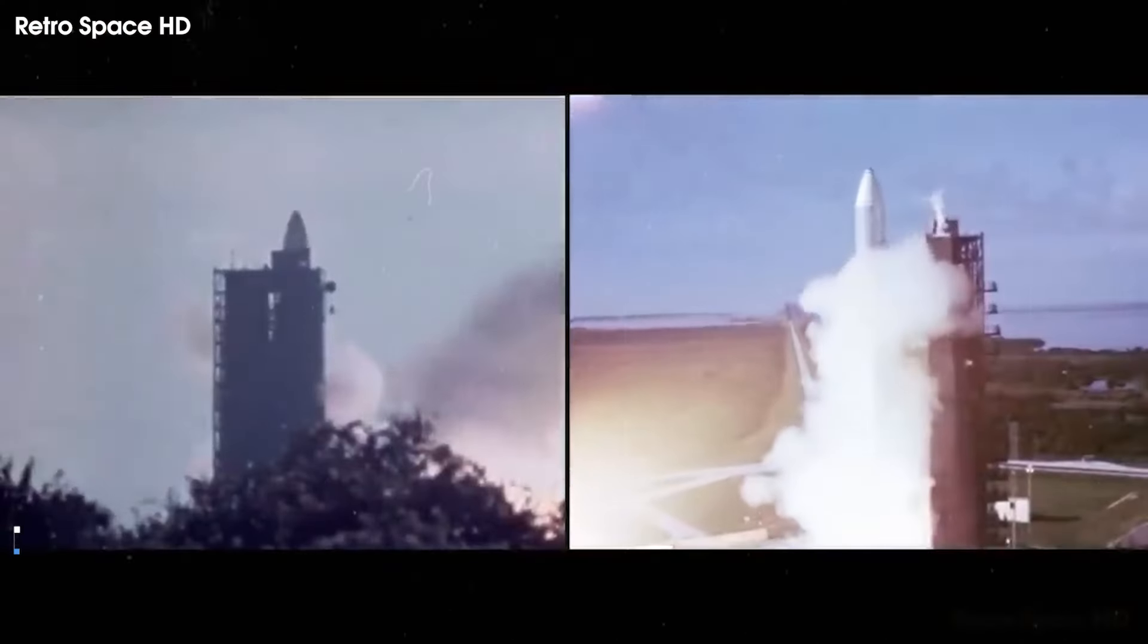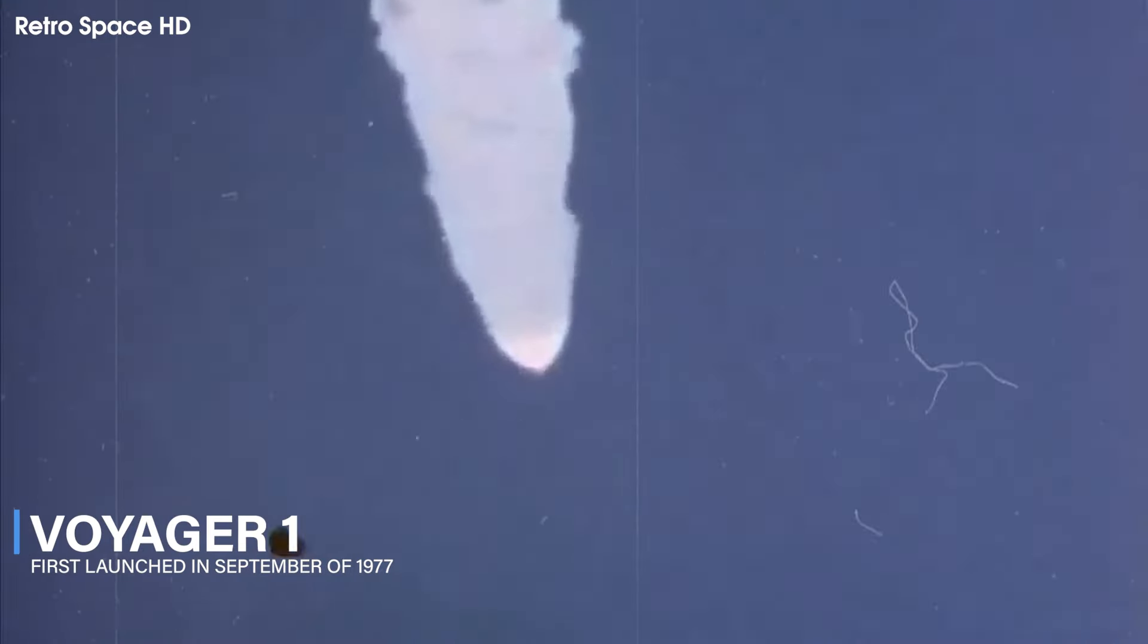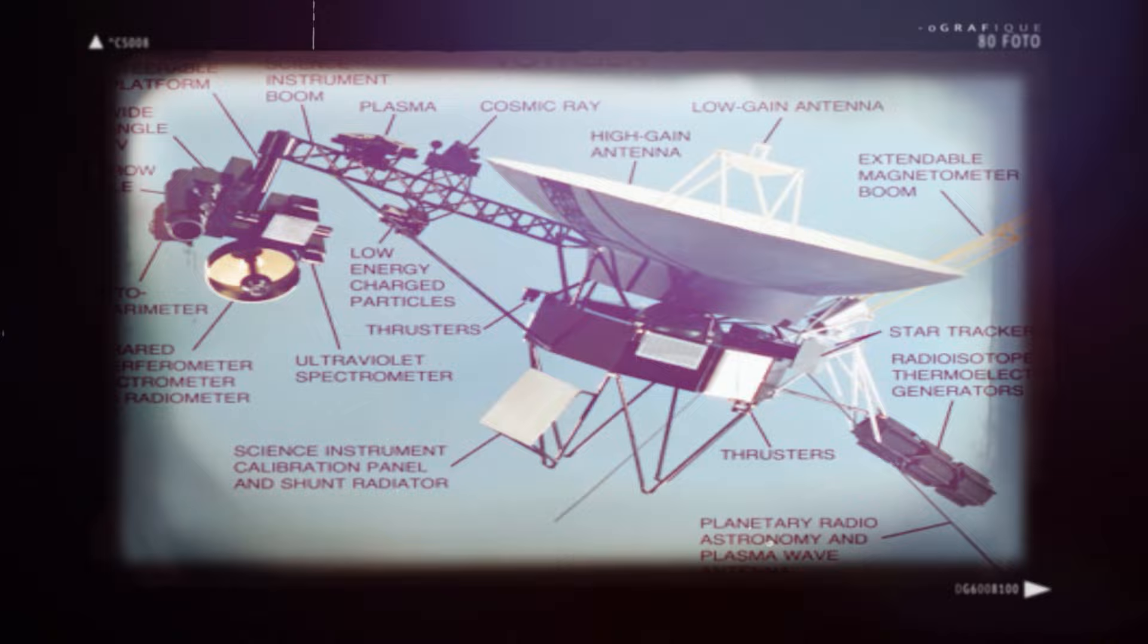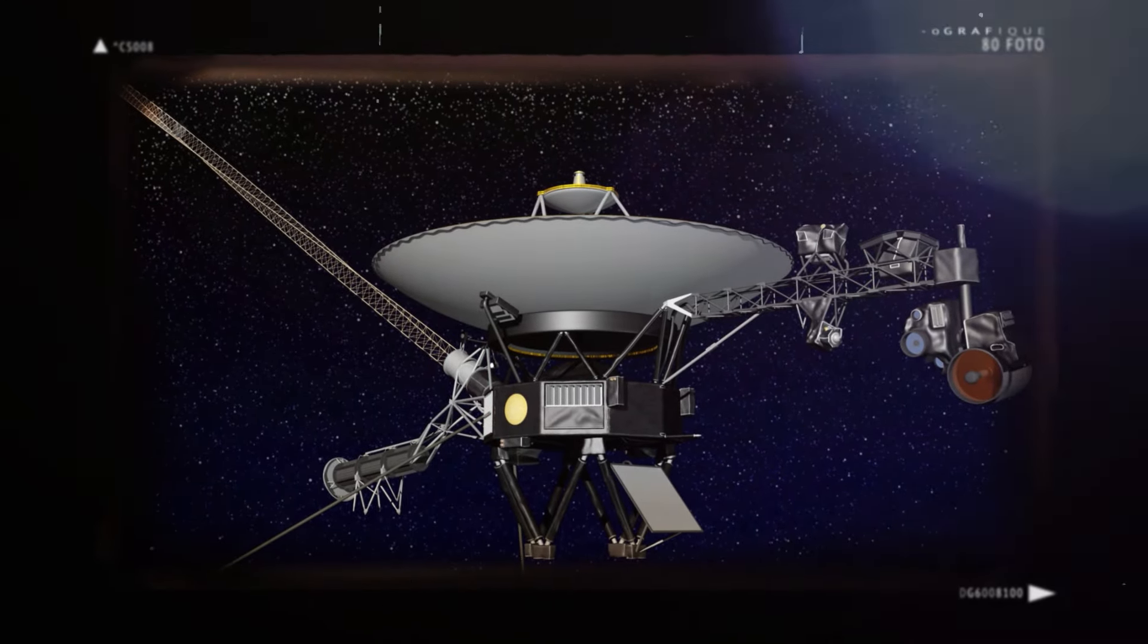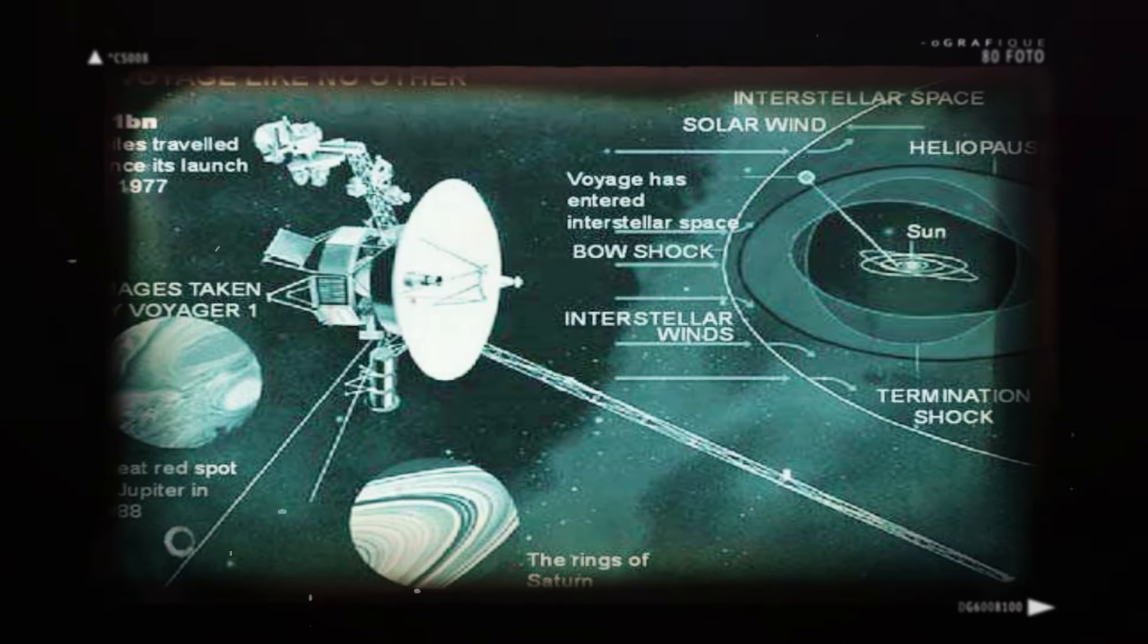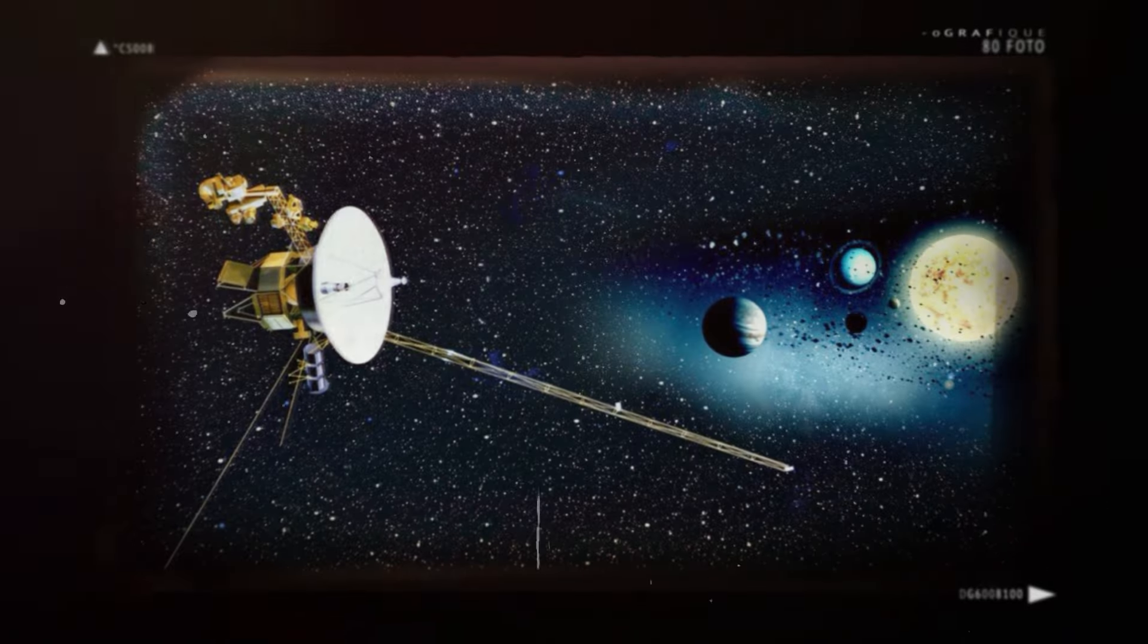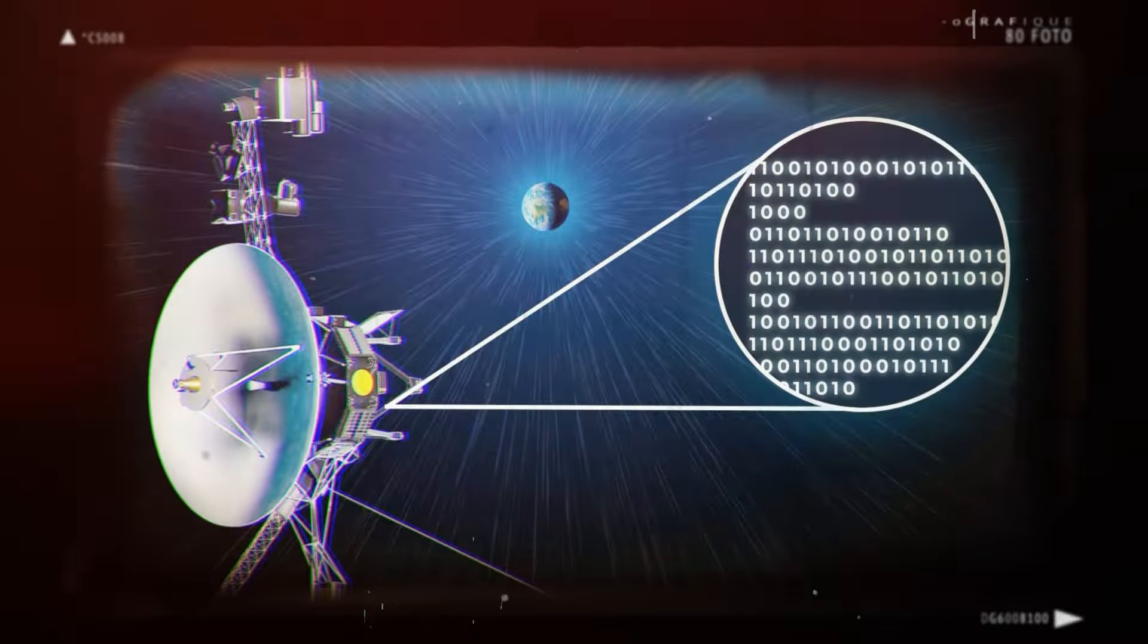But just a few missions ignite the imagination like Voyager 1. First launched in September of 1977, the roughly 1,800-pound space probe careered toward the outer edges of the solar system. Surpassing the distance of its sibling Voyager 2 in December of that same year, Voyager 1 was the first spacecraft to exit our heliosphere, becoming humanity's first emissary among the stars.